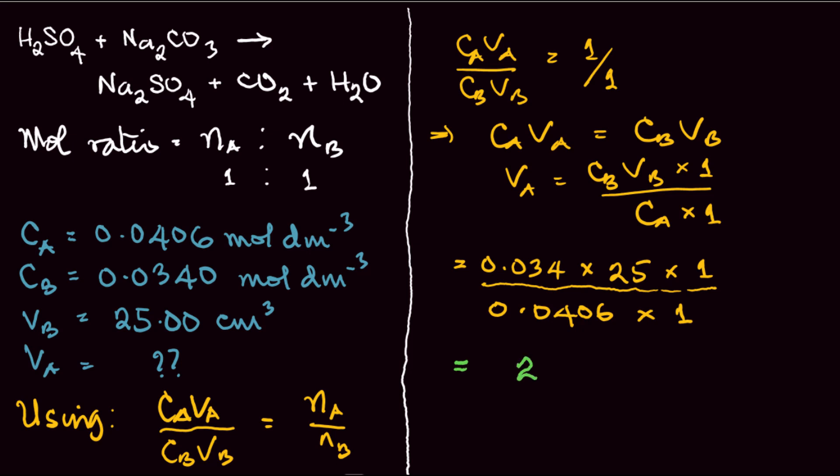Evaluating: VA = (0.034 × 25) / 0.0406 = 20.93 cm³. This is a reasonable value because the acid is stronger and at a slightly higher concentration than the base, so a lower volume of acid is needed to neutralize 25 cm³ of base. This is your theoretical titer value: 20.93 cm³.